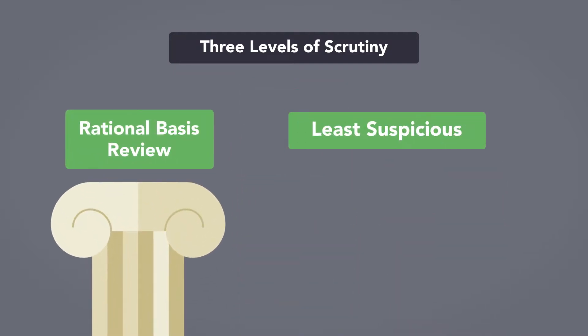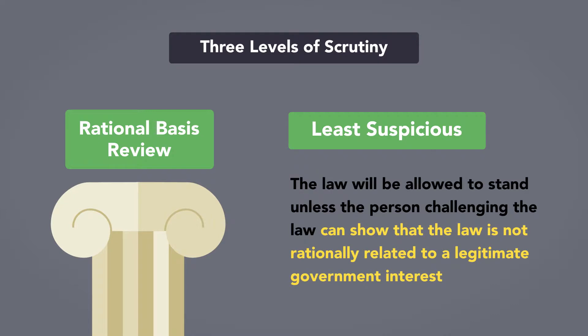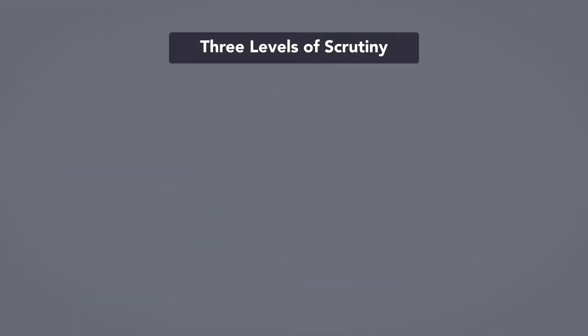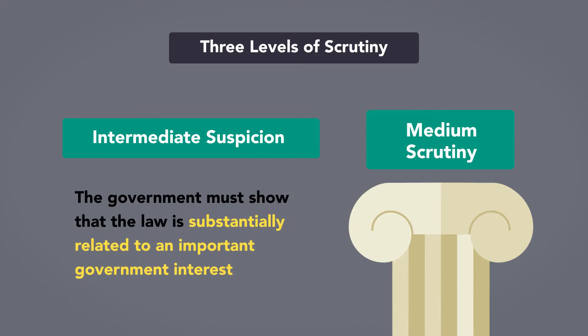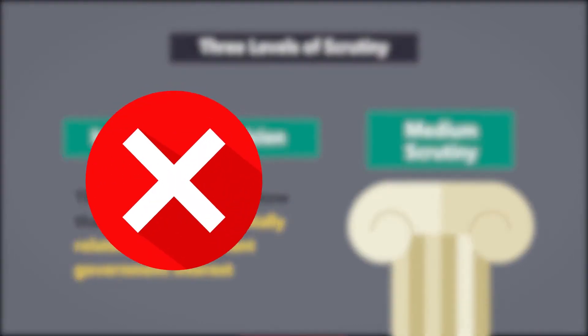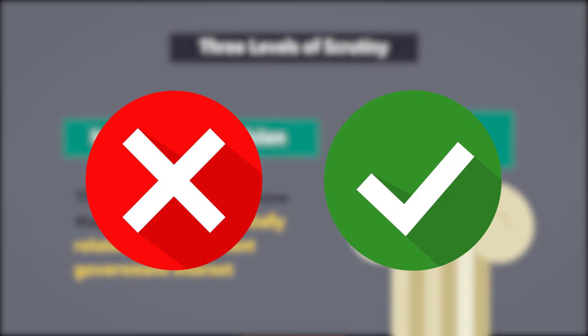Laws that are the least suspicious get rational basis review, which means the law will be allowed to stand unless the person challenging it can show the law is not rationally related to a legitimate government interest. Laws subjected to rational basis review rarely get struck down. When a law is subjected to medium scrutiny, the government must show that it is substantially related to an important government interest. There are many examples of laws failing medium scrutiny, but a comparable number where laws have passed medium scrutiny.